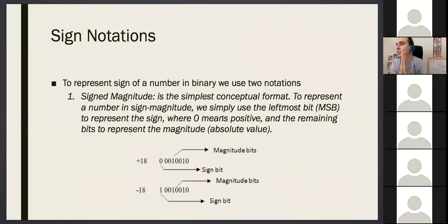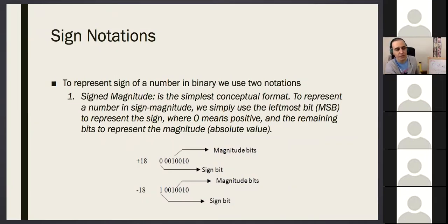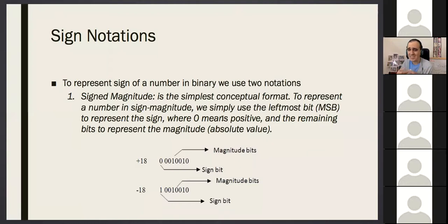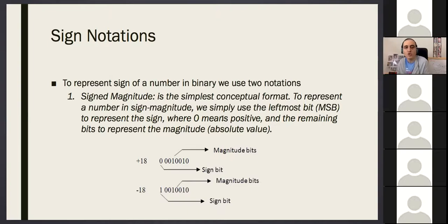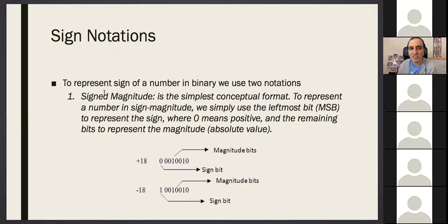I'll continue with sign notations. The examples I've shown up to now are about positive integers — I've never mentioned negative or positive. But if you want to represent a negative number, you need a sign. In computer systems we don't have specific transistors that show signs — we only have flip-flops, zeros and ones. So if you're going to represent a sign, you will need to use bits.